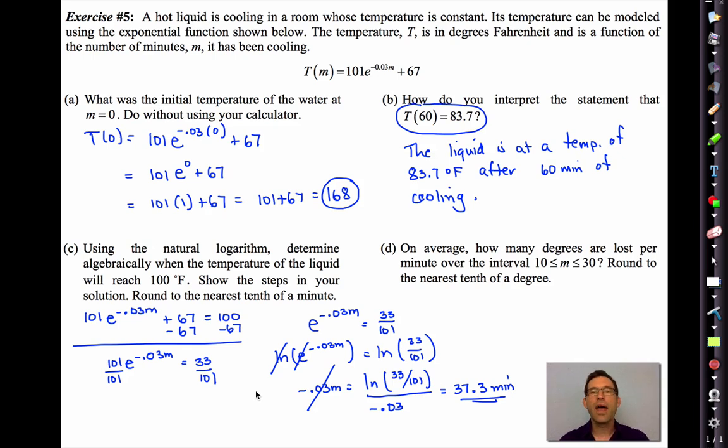Let's take a look at D. On average, how many degrees are lost per minute over the interval 10 ≤ M ≤ 30. Round to the nearest tenth of a degree. Now, take a look. I'm trying to figure out the number of degrees per minute. That's a rate of change. It's essentially an average rate of change. So what I really need to do is know what is the temperature at 10 minutes, and I need to know the temperature at 30 minutes. So what I'd like you to do is try to use your calculator to evaluate both of those two temperatures. What you could do is you could put this into Y1, as if you were going to graph it, and then use a table to come up with those two temperatures.